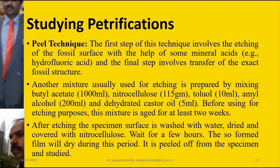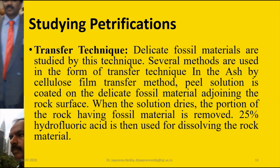We also have the peel section technique, where the thin section taken is peeled out in the form of a thin film using a gum called nitrocellulose, along with some acids. The thin section is transferred onto a peel using this technique. We also have the transfer technique, where ready-made cellulose films — like cellophane tape — are placed onto the fossil, transferring the fossil onto the cellulose film for further study. This applies when organic matter is still available in the petrification and it has not been completely converted into rock.